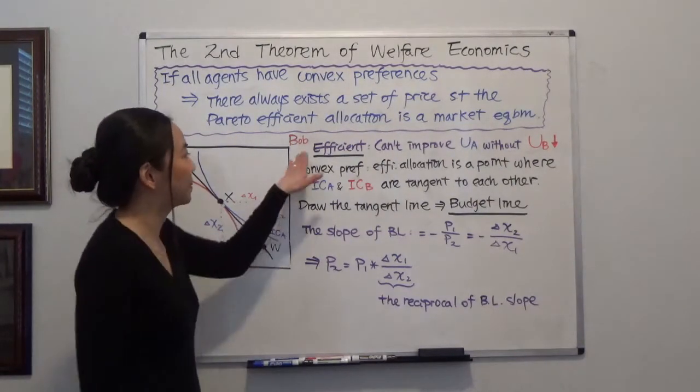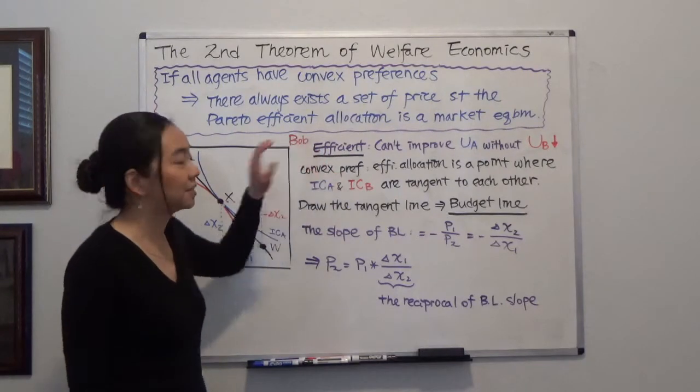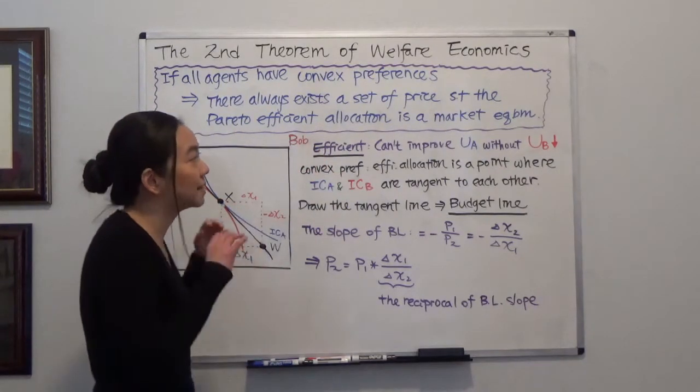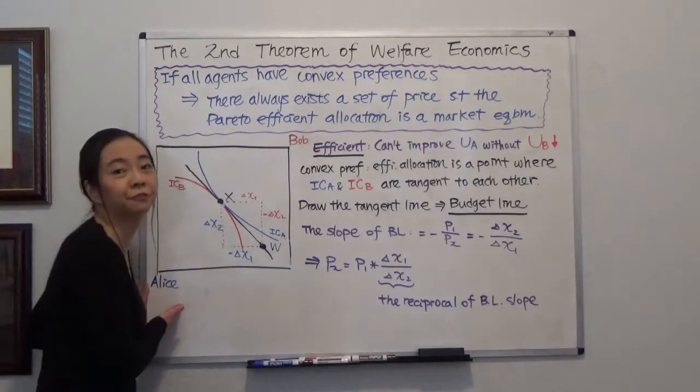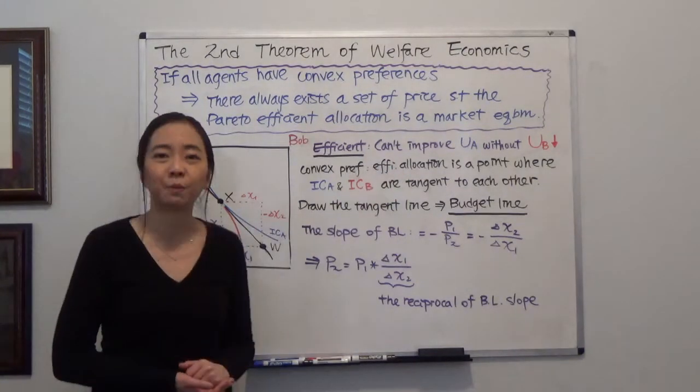So let's do a quick recap about efficiency. Efficiency means that we will not be able to improve Alice's welfare without hurting Bob's welfare.